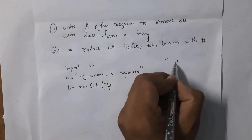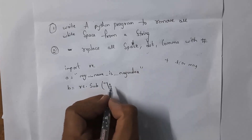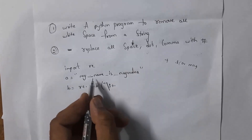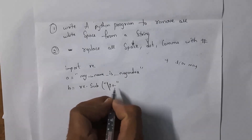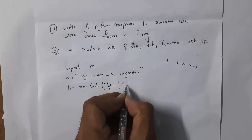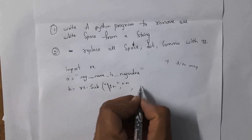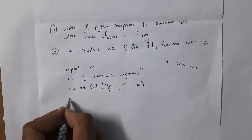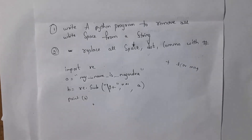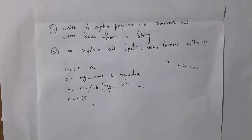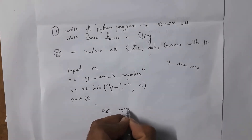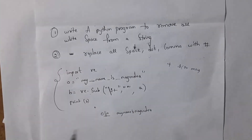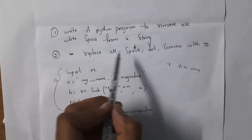Use \s+ to match one or more spaces. This means if a space is present once or more than once, it will remove those spaces — replacing them with nothing, i.e., an empty string. This string is present in variable a, so write a. When you print b, you will get the output 'mynameisNagendra' without any spaces. The substitute function returns output as a string.